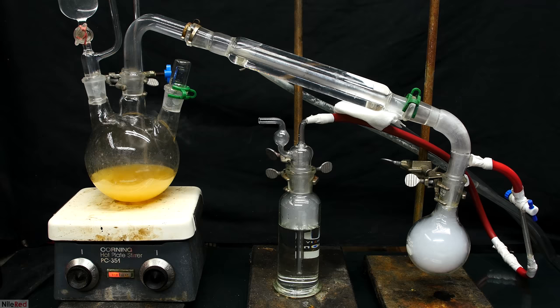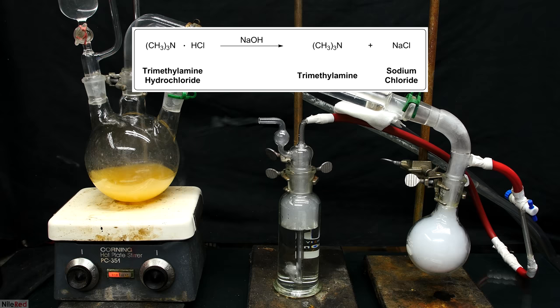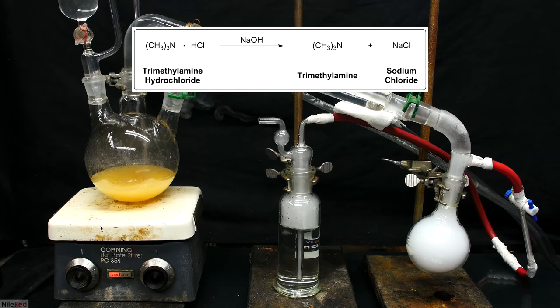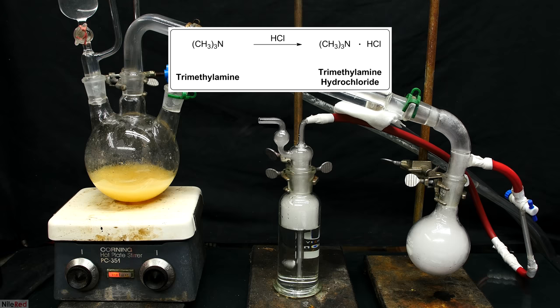In terms of reactions, what we're doing here is actually pretty simple. In the reaction flask, we have an acid-base reaction which produces our free base trimethylamine and sodium chloride salt. The trimethylamine that escapes as a gas is then bubbled through the hydrochloric acid. The reaction in the bubbler is pretty much the opposite of what we just did, and we're recreating the trimethylamine hydrochloride.